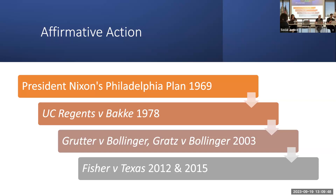Abigail Fisher sued the University of Texas, which has a top 10% plan — understanding that schools are very unequal. If you made it in your top 10%, you'd be granted admission. Fisher went to a high-performing high school, wasn't in her top 10%, and got denied. She took it to the Supreme Court, and the conservative majority still said race is a factor.